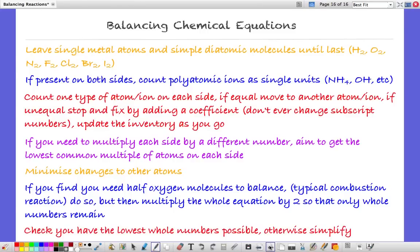And lastly, at the end check that you have the lowest whole numbers possible. Otherwise simplify and basically cancel everything down to get the simplest whole number ratios. Alright, that's the end of my tips and tricks. Hopefully they're useful and see if you can apply them. Good luck.